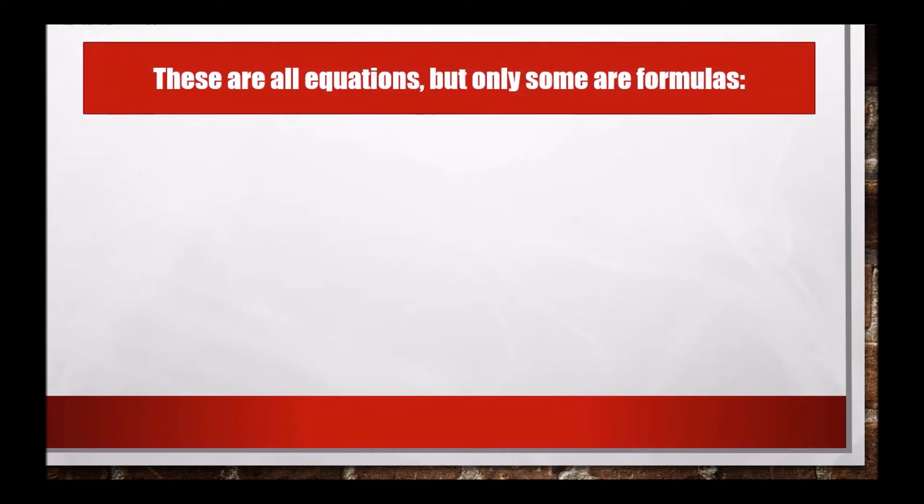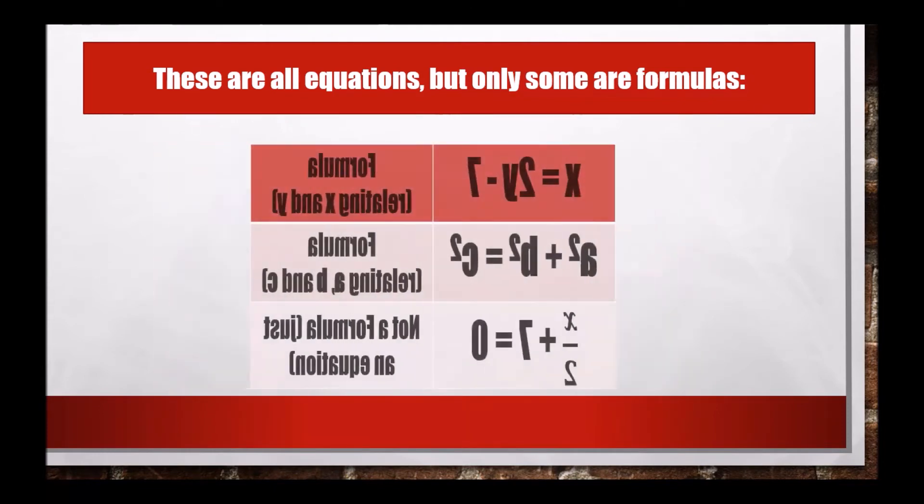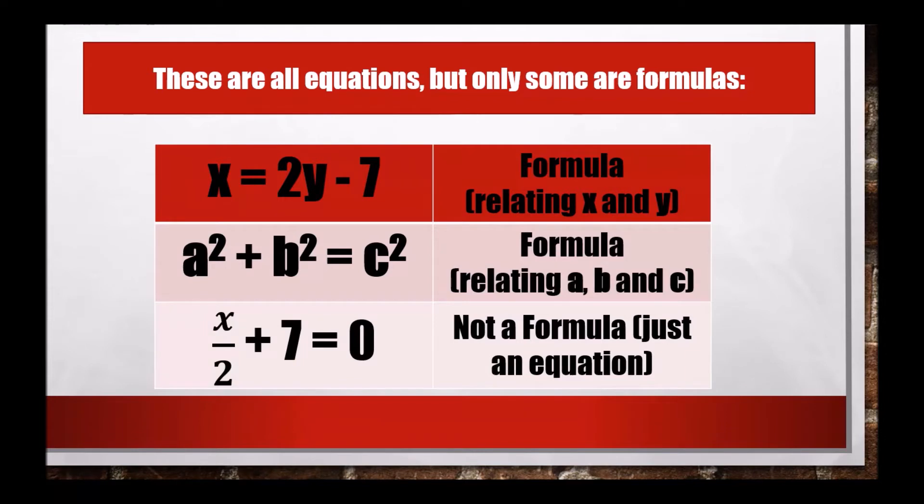These are some examples of equations, but only some are formulas. Here x = 2y - 7 is an equation and it's also a formula relating x and y. a² + b² = c² is also an equation and also a formula relating a, b, and c. x/2 + 7 = 0, it's not a formula, just an equation.